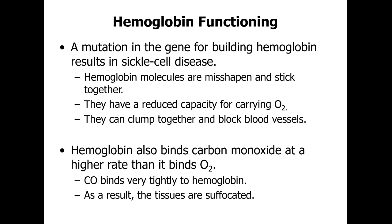Sickle cell anemia is a genetic disorder caused by a mutation in the hemoglobin gene. The misshapen, sickle-shaped hemoglobin molecules stick together, carry oxygen poorly, and can clump to block vessels. They are stiff and inflexible, unable to pass through capillaries, arterioles, and venules. Hemoglobin also binds carbon monoxide at a higher rate than oxygen — when CO binds tightly, it suffocates the tissues.